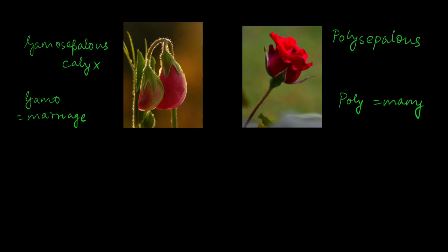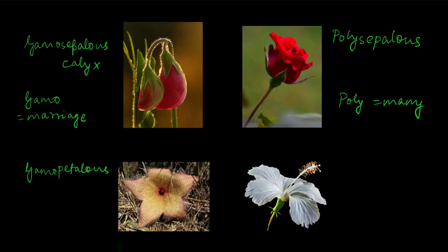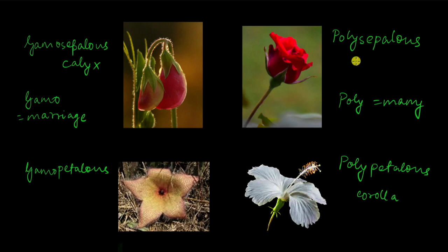We have a very similar thing going on for petals as well. For example, in this flower the petals are all joined together, so we call them gamopetalous. And just like polysepalous, we have something called polypetalous — like in the hibiscus flower, all the petals are completely separate from each other. So this is called polypetalous. The corolla consists of the petals, so we have a polysepalous calyx, a polypetalous corolla, or a gamopetalous corolla.